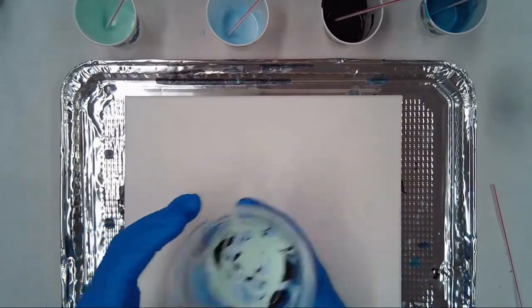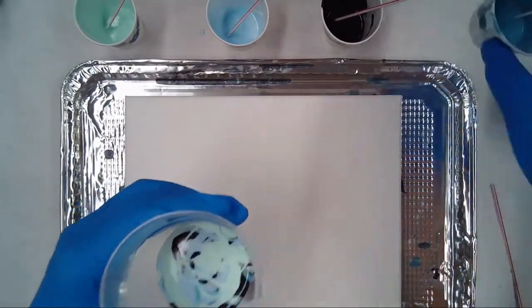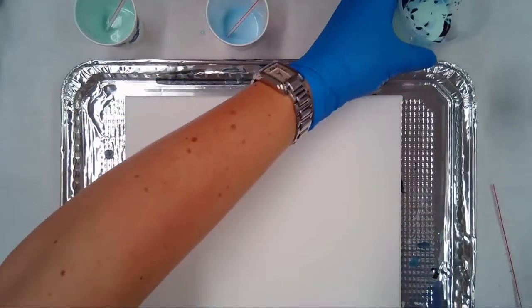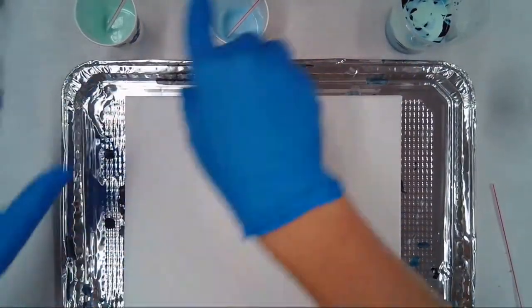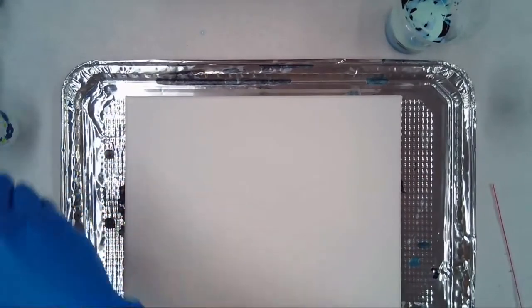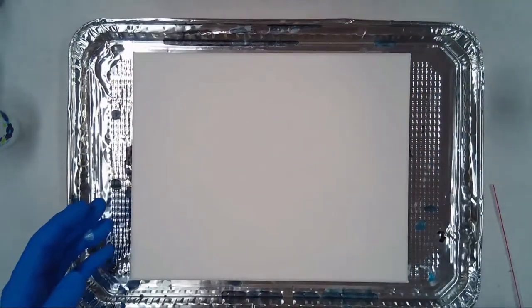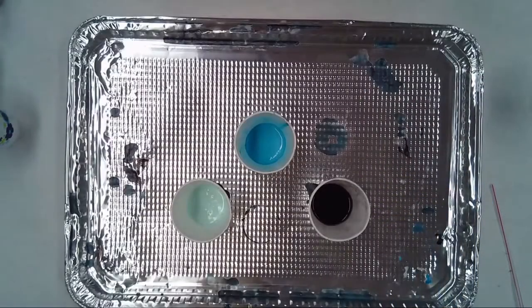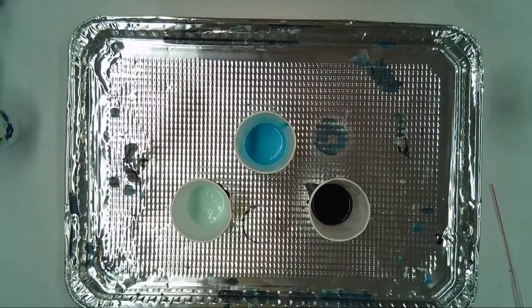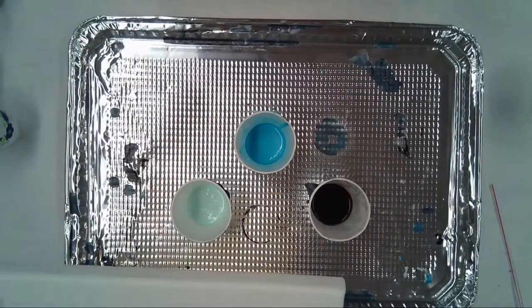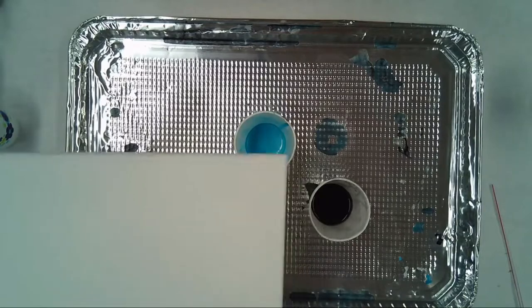Alright, so like I said, we're going to do flip cup. I'm going to move these out of the way. I'm going to scoot this forward a little bit. Alrighty, so I've got my cups from last time left over. Those are just going to keep my canvas up off the drip tray and allow all the paint to drip off the edges.